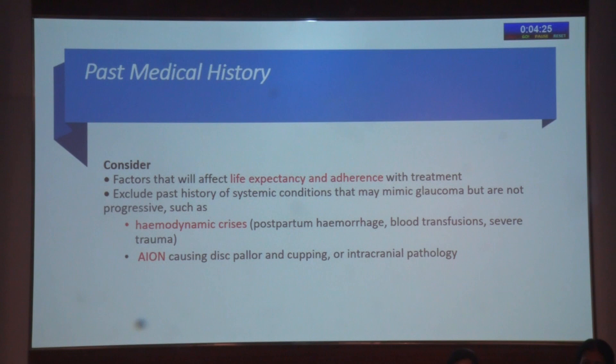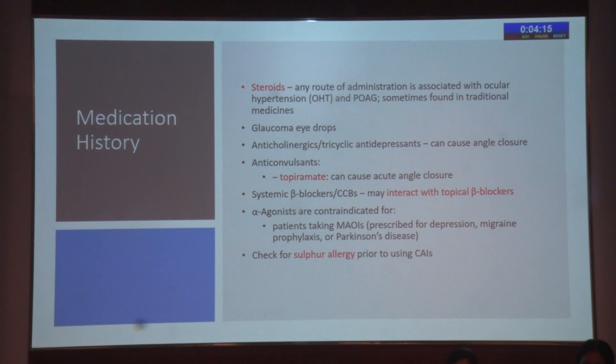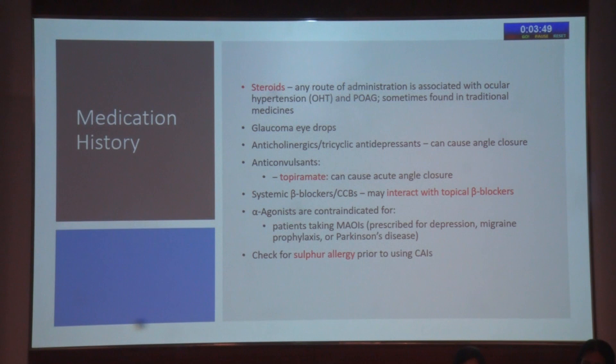An important aspect is medication history in glaucoma. Steroids by any route are important. If the patient is already on glaucoma eye drops, you need to know those details. Systemic medications like anticholinergics and tricyclic antidepressants can cause angle closure. Topiramate causes bilateral acute angle closure. Systemic beta blockers taken for hypertension can interact with topical beta blockers, making the topical beta blockers less effective. Alpha agonists are contraindicated if MAO inhibitors are used. If acetazolamide is prescribed, ask for history of sulfur allergy before giving the medication.